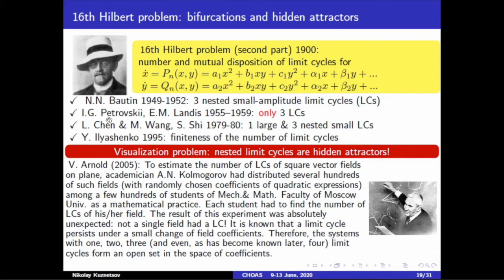The first non-trivial result was obtained by Bautin, who developed ideas of Andronov and constructed analytically three limit cycles nested around one equilibrium point using bifurcation technique and small parameters. Later, Petrovsky, who was then director of Moscow State University, and Landis proved that the maximum number of limit cycles is 3. However, soon Petrovsky found a gap in his proof and spent the rest of his life trying to fill it, but it turned out to be impossible. Almost at the same time, two groups in China found a configuration with four limit cycles. Ilyashenko later proved the finiteness of limit cycles in polynomial models.